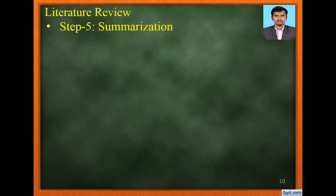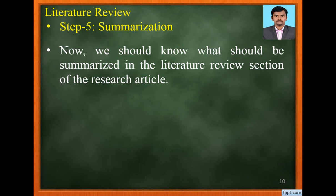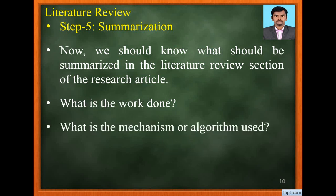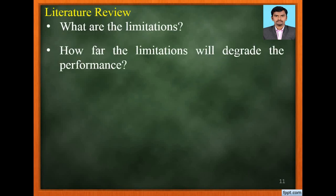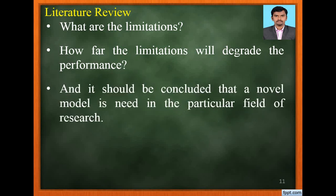Step 5 Summarization. We should know what should be summarized in the literature review section. What is the work done in the previous research, what mechanism or algorithm was used, how far it is advanced, what are the limitations, how far the limitations degrade the performance, and it should be concluded that a novel model is needed in the particular field of research.